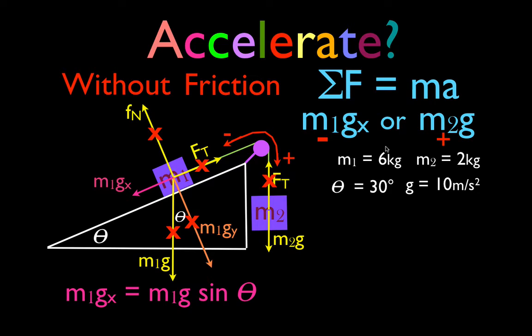Now let's calculate M1GX and M2G and see will these objects accelerate in the negative or positive direction. So M1GX we calculate as M1G sin θ. That's M1 times g times the sine of 30, which is one half. So that means in this case M1GX is 30 newtons.